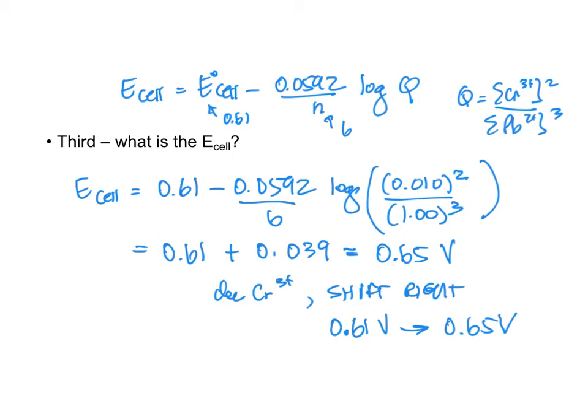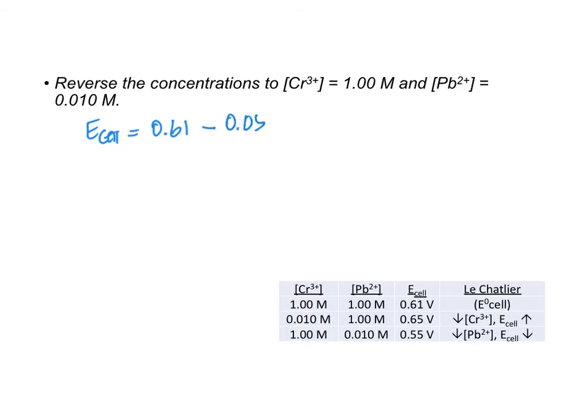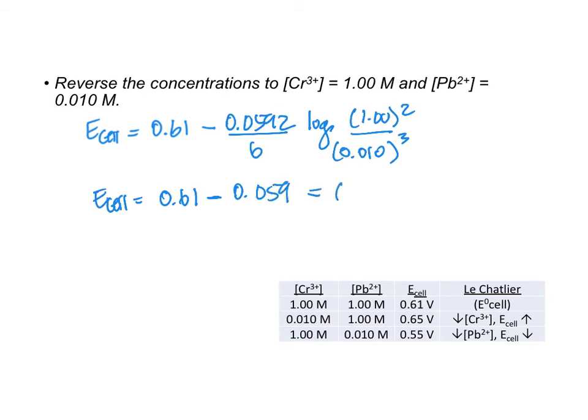Since we're in a teaching situation, what if I reverse those concentrations? We still have that 0.61 E°. We still have the six electrons. But what we have now is the concentrations are reversed. 0.010 is on the bottom cubed and one is on the top. When I do my E cell, it says 0.61 minus 0.059. And I come up with 0.55 volts.